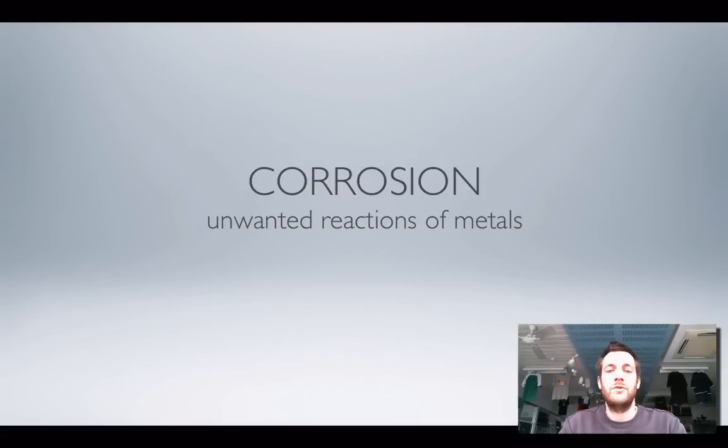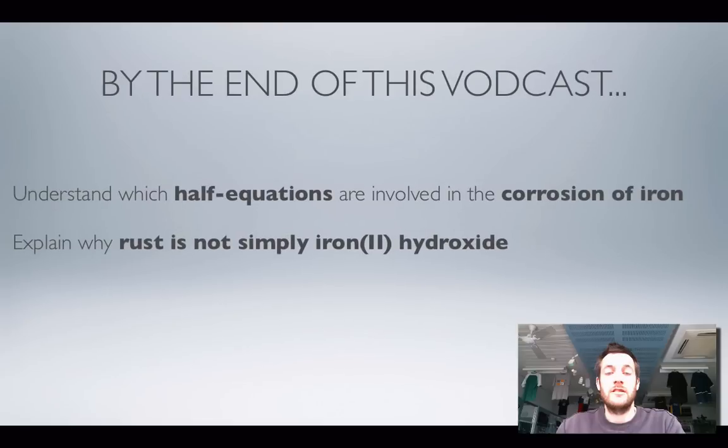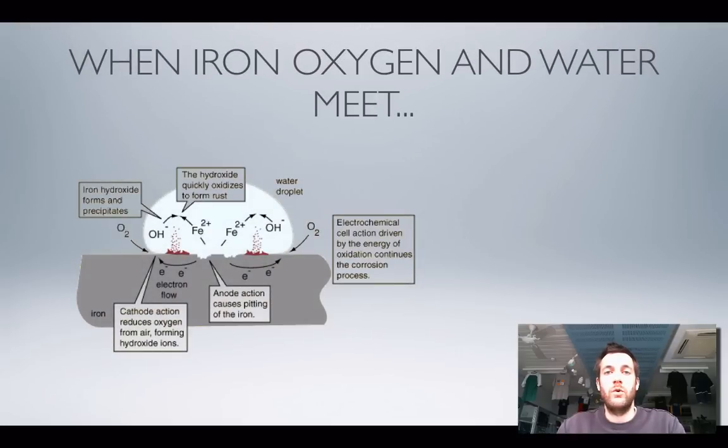Hello and welcome to this film which is all about corrosion, specifically the corrosion of iron or what a lot of people know as rusting. This is a reaction that we often try to prevent, but we'll look at that prevention in the next film. Hopefully by the end of this film you'll be able to look up some half equations on your data sheet that will allow you to explain what's going on when rusting takes place, and you'll have some understanding of why we might think that rust would just be iron hydroxide, but it ends up not being iron hydroxide.